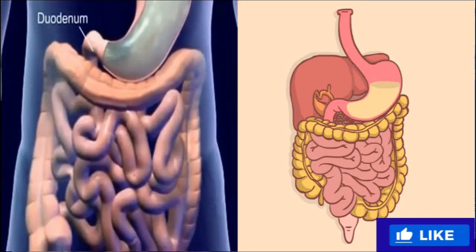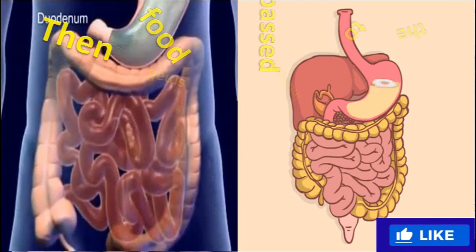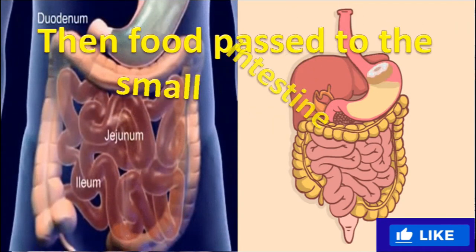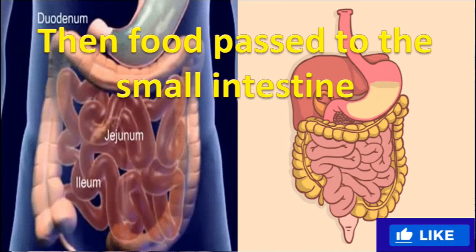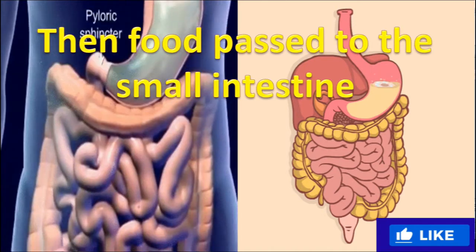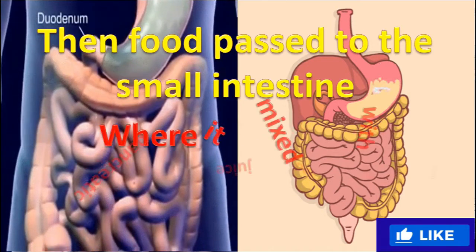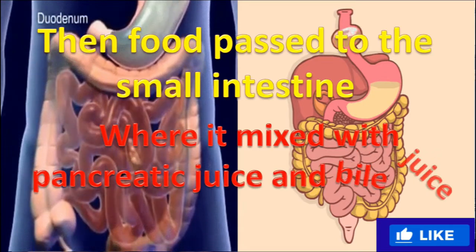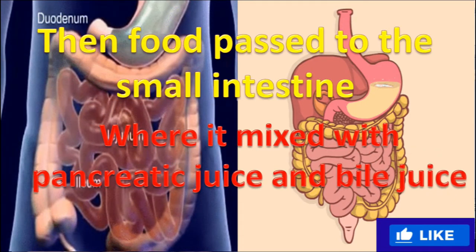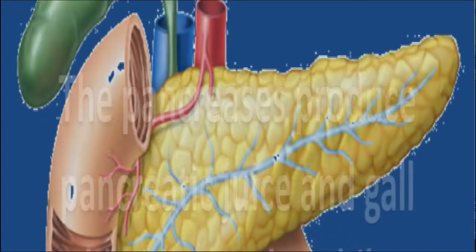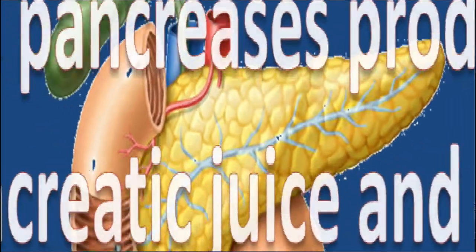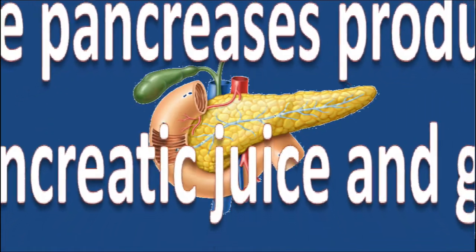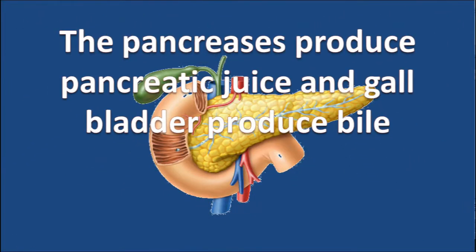Then food passes to the small intestine, where it is mixed with pancreatic juice and bile juice. The pancreas produces pancreatic juice and the gallbladder produces bile.